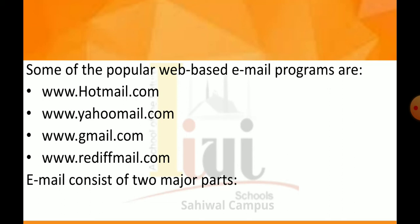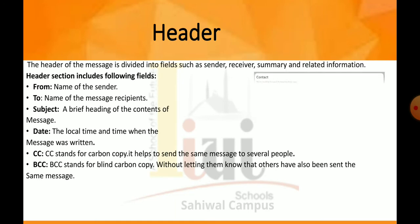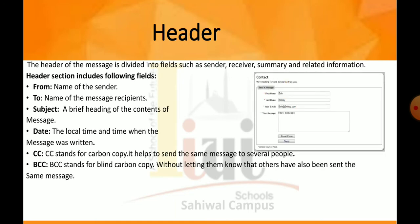Email consists of two major parts. First is the header — the header of the message is divided into fields such as sender, receiver, summary and related information. آپ کے پاس header section میں sender اور receiver کون ہے اور summary کے بارے میں چھوٹی سی information given ہوتی ہے۔ From: the email address and optionally the name of the sender۔ To: the email addresses and optionally the names of the message recipients۔ Subject: brief heading of the contents of the message — کس بارے میں discussion ہو رہی ہے۔ Date: local time and date when the message was written — کب یہ message بھیجا گیا۔